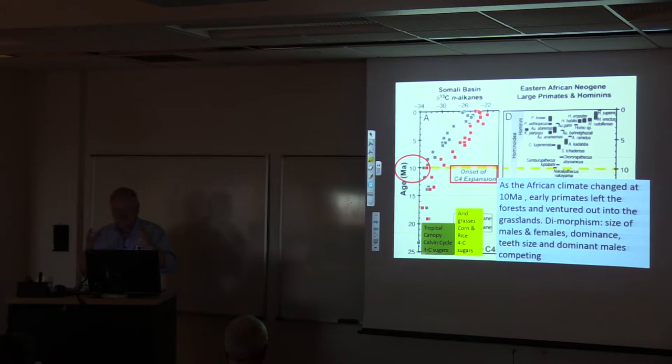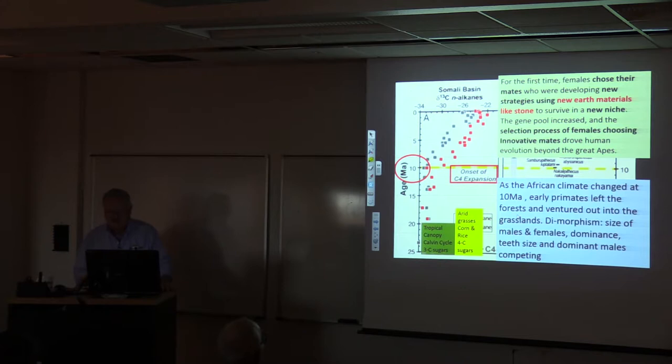What they think happened was very interesting. For the first time, somewhere in here, female hominids started choosing their mates. Rather than being dominated by a male in the species, they could see in the savannah other males developing new strategies for survival, like using earth materials like stone, people learning how to knap flint and make axes and arrowheads to survive in a new niche. When a new niche opens up, biology just transforms itself. Just like when the dinosaurs died out with a bolide impact, mammals evolved like mad. Horses went from a little five-toed species about the size of a terrier dog to equus.